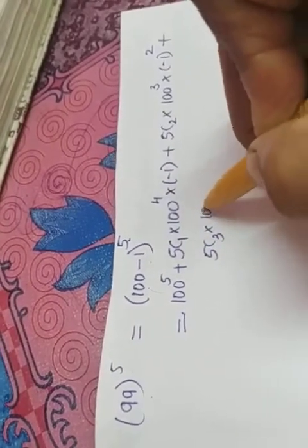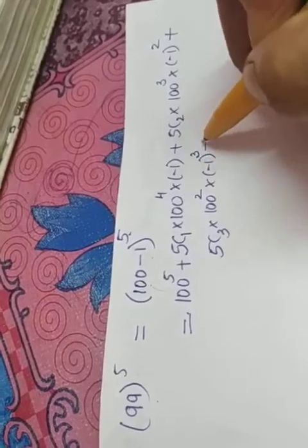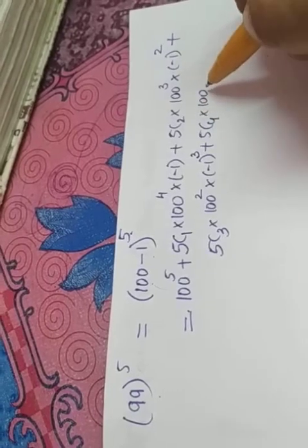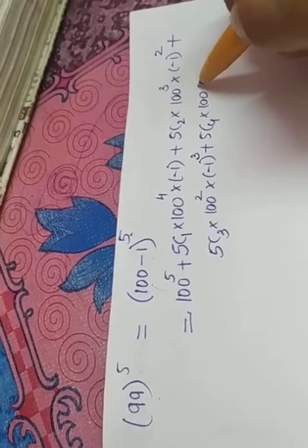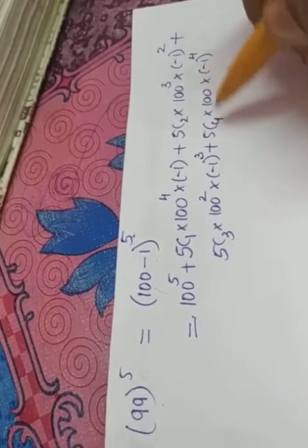5c3 into 100 square into minus 1 cube plus 5c4 into 100 into minus 1 raised to 4.